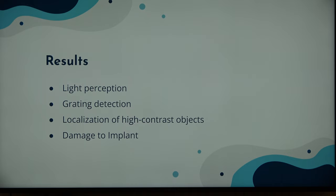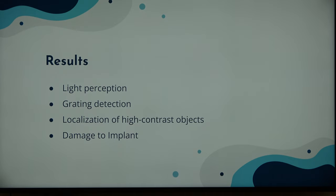Results. Similar to Argus II, there was adequate light perception in all participants. Grating detection was improved — grating is the ability to differentiate between black and white parallel lines, so that detailed kind of vision was improved. There was also improved localization of high contrast objects on a dark surface. One downside was damage to the implant: over the course of a couple of years — around year three — there was some erosion of the implant, which means it has to be removed.